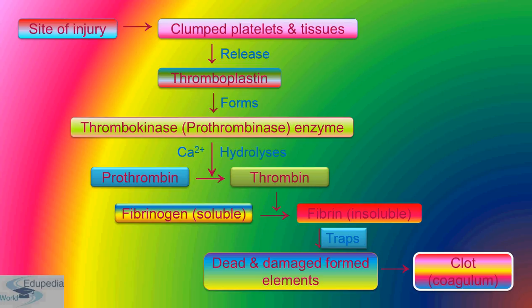Blood coagulation is a suitable target for treating diseases involving dysregulated blood clotting or the absence of clotting. In the treatment of hemophilia, for example, a clotting factor that is deficient or missing is replaced. On the other hand, certain coagulation factors can be inhibited to prevent and treat thrombosis. This concludes the topic of blood coagulation and the circulatory system chapter. Thank you, and keep watching Edupedia World videos.